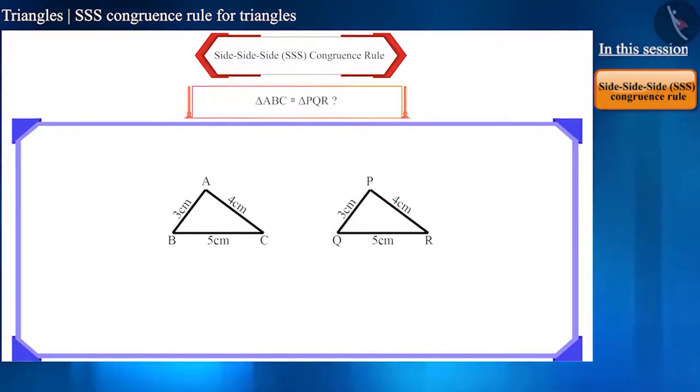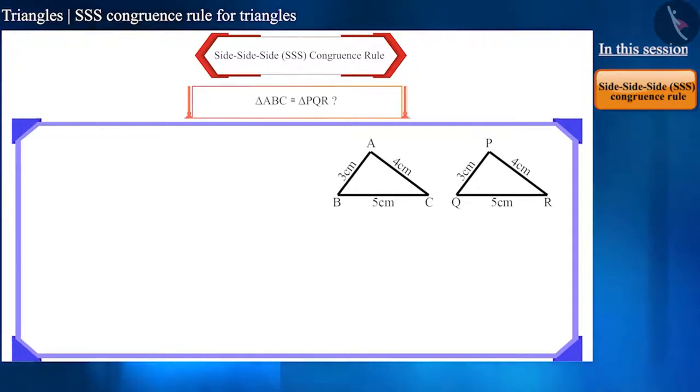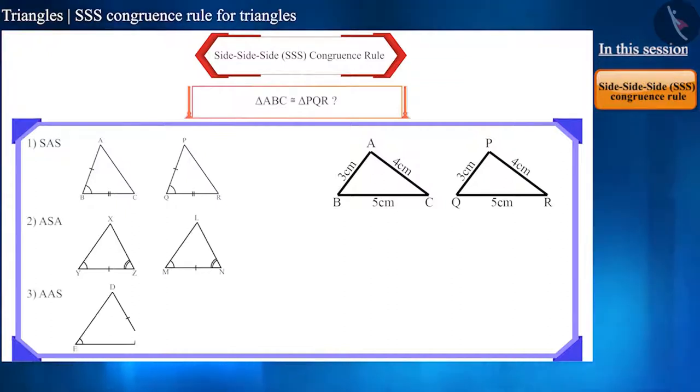Friends, the rules of congruence that we learnt so far, such as SAS, ASA, AAS and RHS have at least one angle in them.